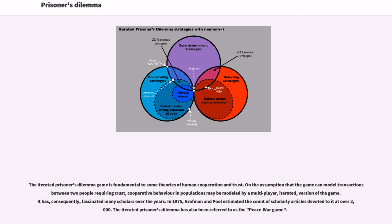It has consequently fascinated many scholars over the years. In 1975, Groveman and Poole estimated the count of scholarly articles devoted to it at over 2,000. The Iterated Prisoner's Dilemma has also been referred to as the Peace War game.